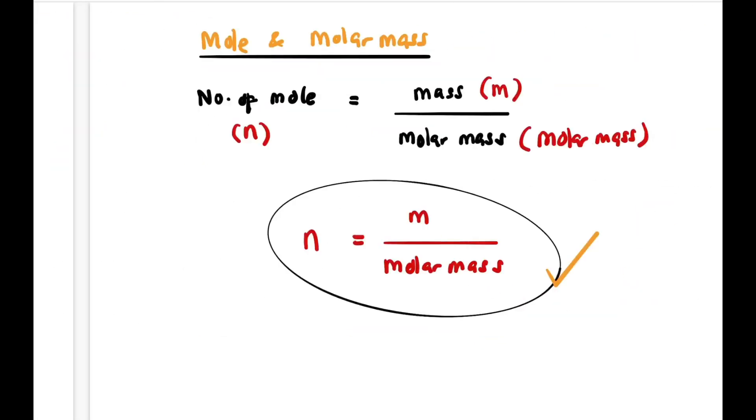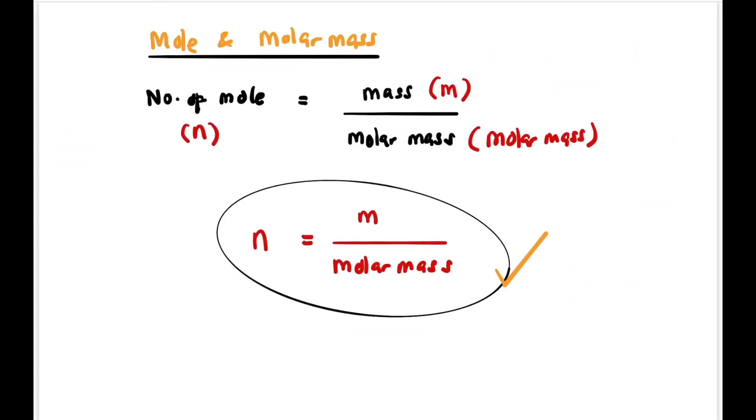Now let's have a look at the relationship between mole and molar mass. Number of moles equals mass divided by molar mass: n = m/M.